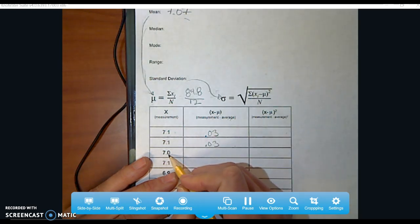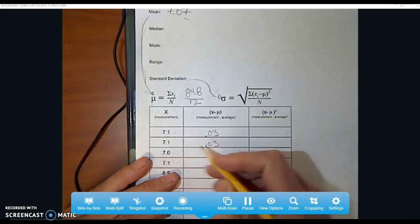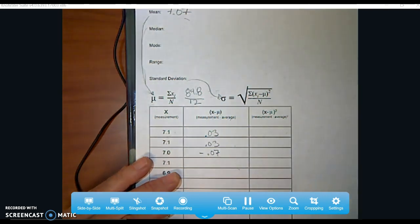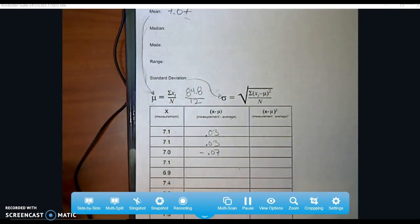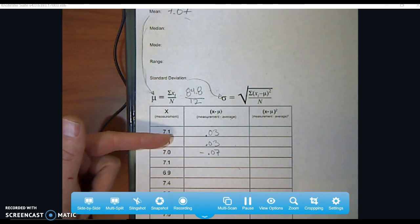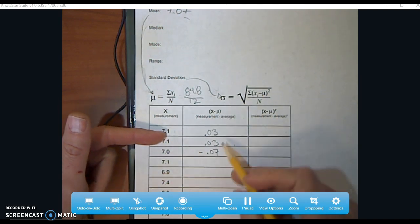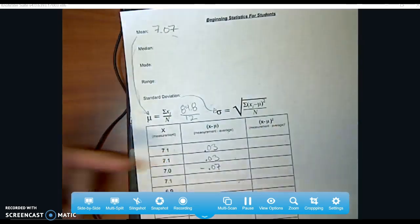That's the same value. 7.1 minus 7.07 is 0.03. This one would be the measurement 7.0 minus 7.07. This would be negative 0.07. And that's okay to have negative numbers. It just means that your average value is less than the measurement. You're going to have negative numbers, in fact. So take a moment and finish doing that. Just subtract your measurement and subtract from it your mean.